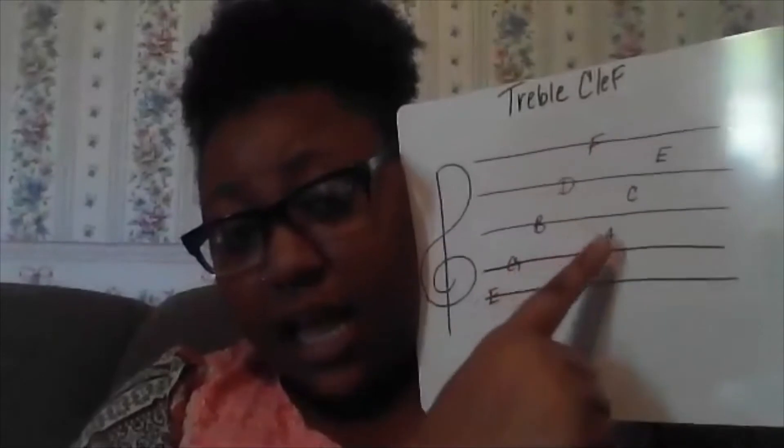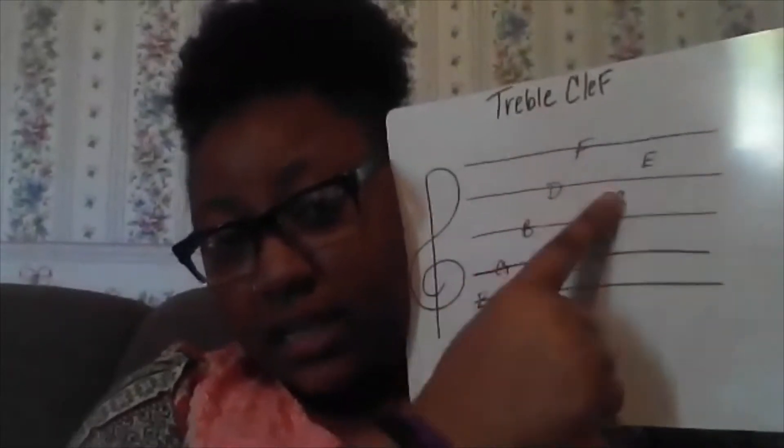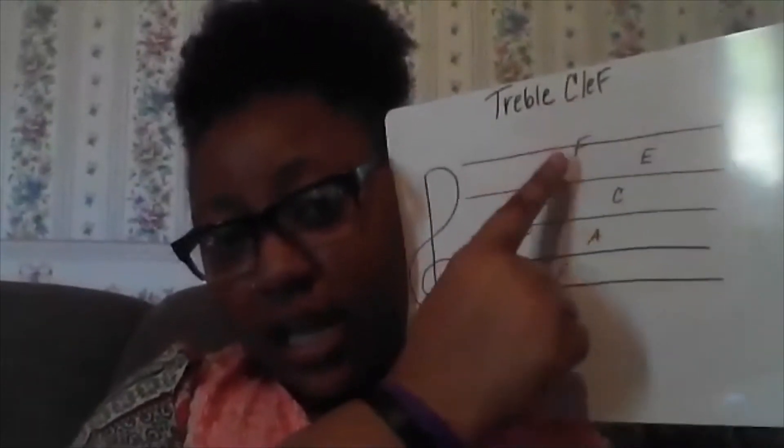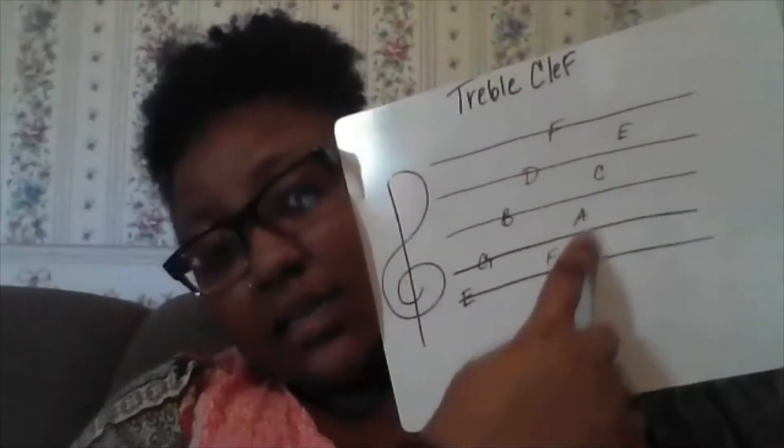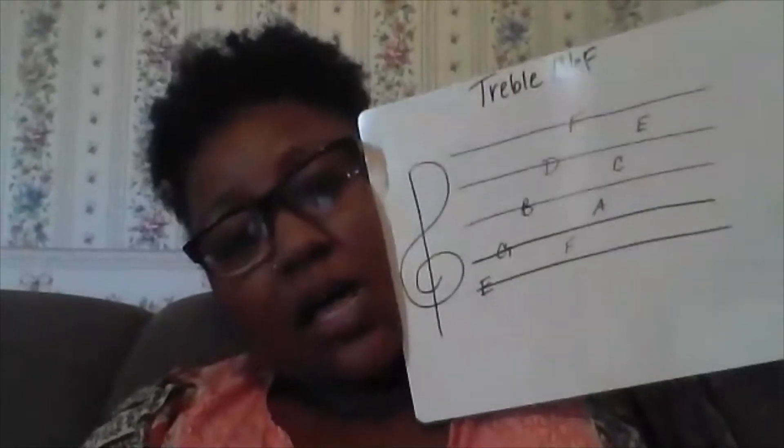The musical alphabet contains seven letters: A, B, C, D, E, F, G. Those are the only seven letters.